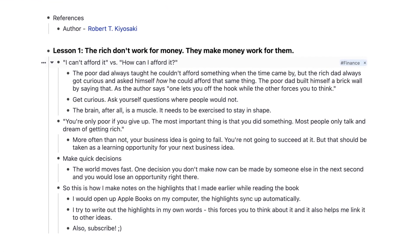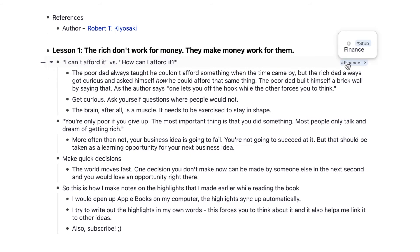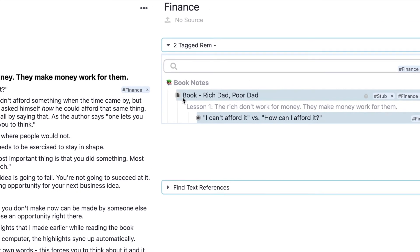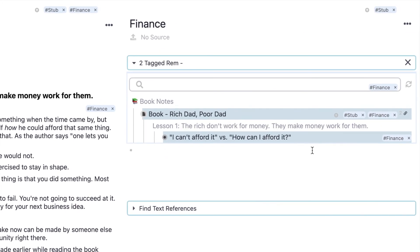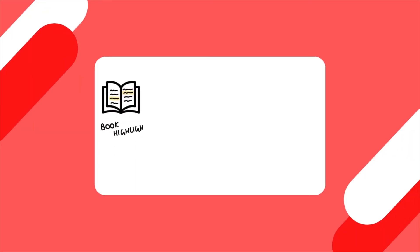Every time I write out a bullet point, I tag it with the appropriate section — so productivity, habit building, time management, finance, whatever. I try to only note down things that I find particularly insightful. I would only highlight and note things that I actually feel are going to make a difference to me — I won't just highlight every single thing I read. It's easy to highlight and write about everything, but subjecting my notes through this filter ensures that my knowledge base is of high quality.